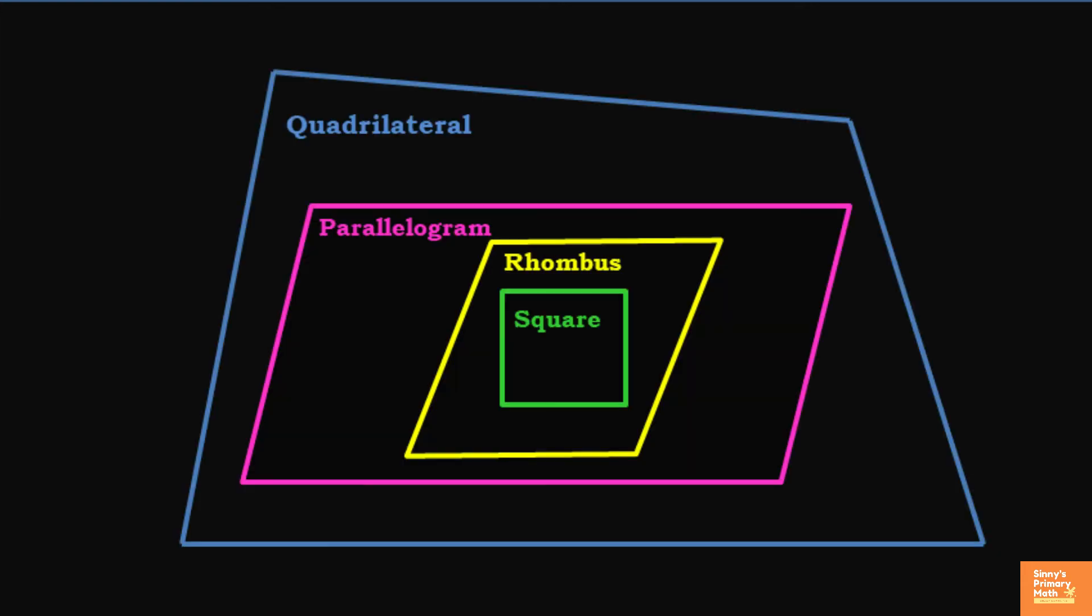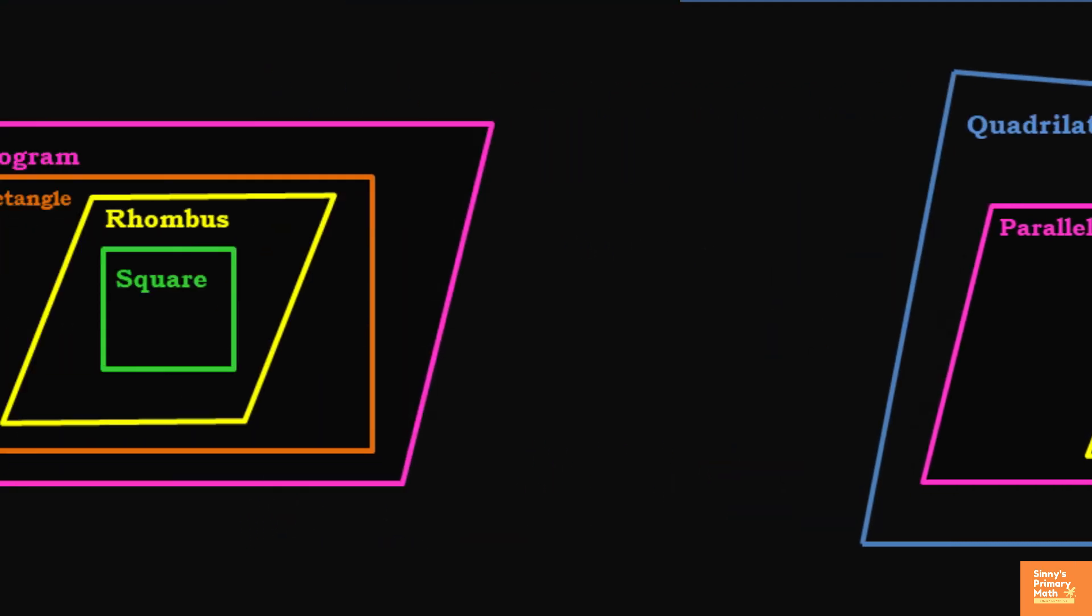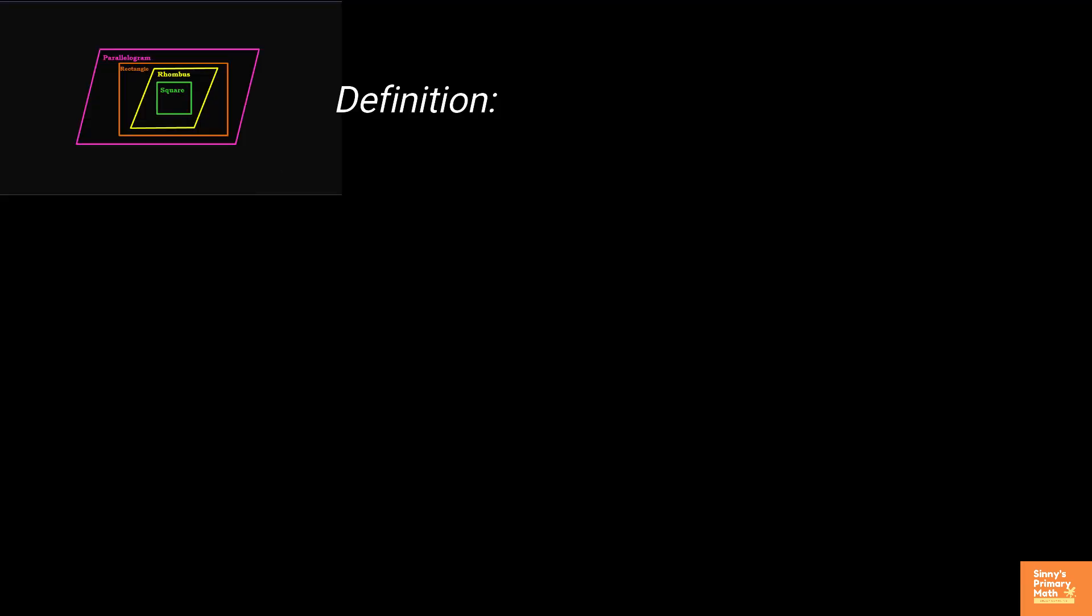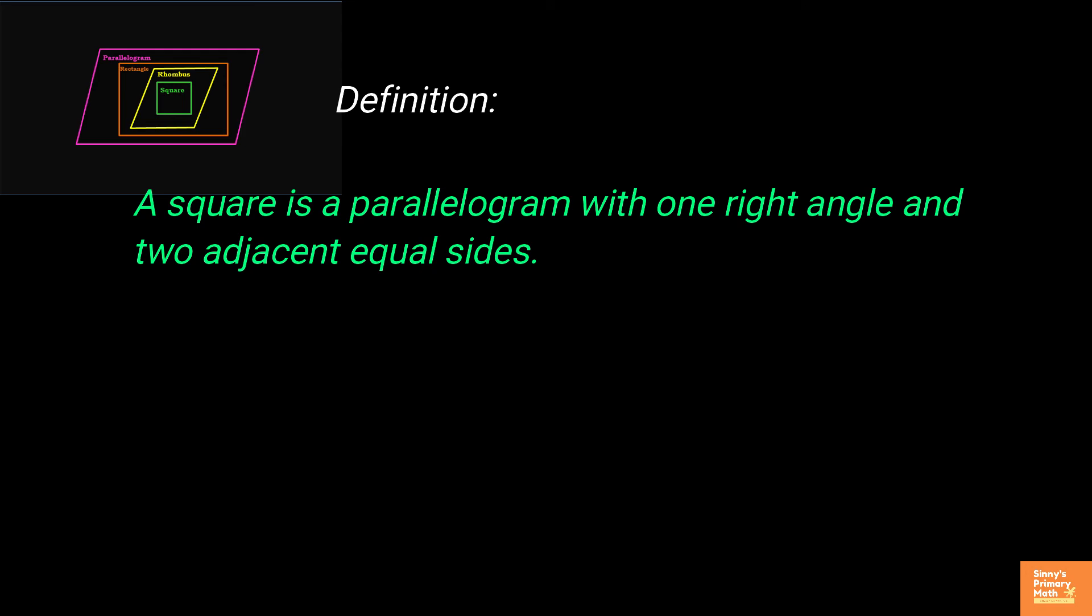Now, let us consider a square. A square is a quadrilateral with all sides equal in length and all interior angles, right angles. A square is also a quadrilateral with four equal sides and four equal angles. It can be defined based on parallelogram, rectangle or rhombus.